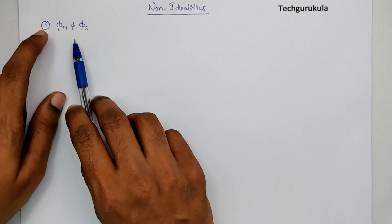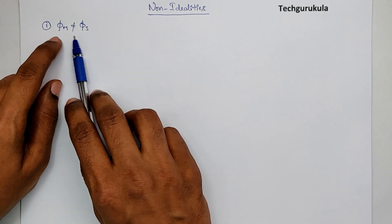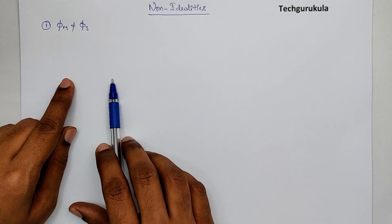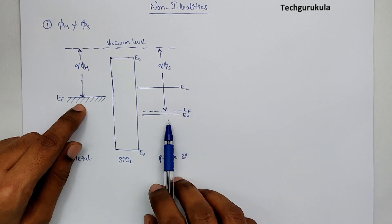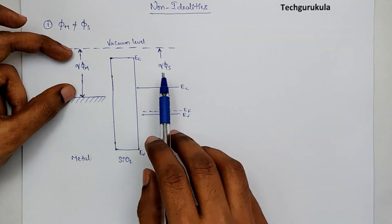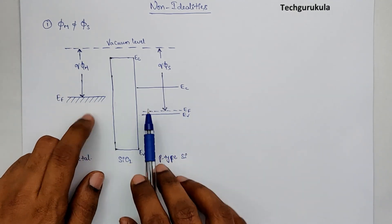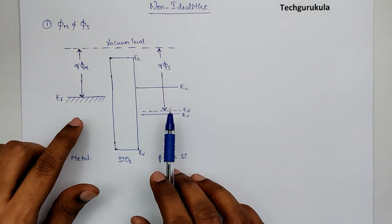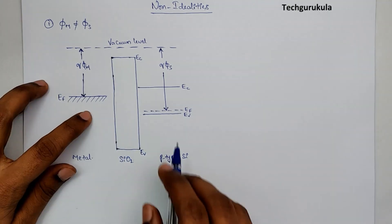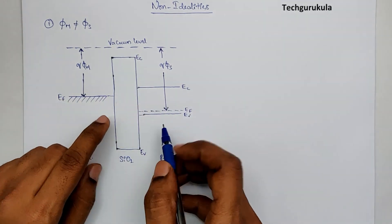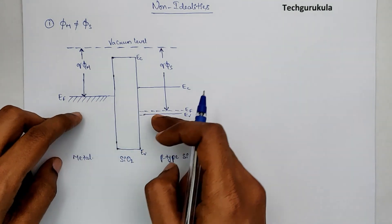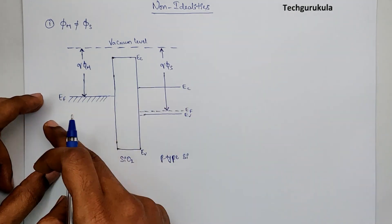Let's consider the first non-ideality: the work function of metal and semiconductor are not the same. Let me draw the energy band diagrams for an isolated metal, isolated semiconductor, and the oxide in between. Here, I have taken φM less than φS. Now, if we try to join these three materials — just like how we analyzed the PN junction, this is a hypothetical way to figure out the equilibrium energy band diagram.